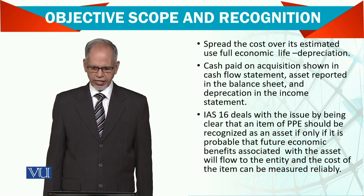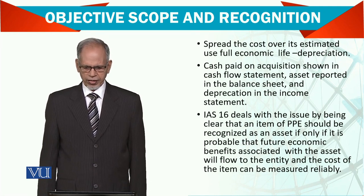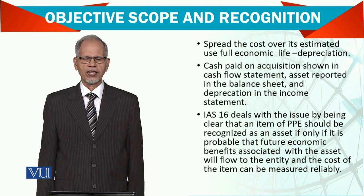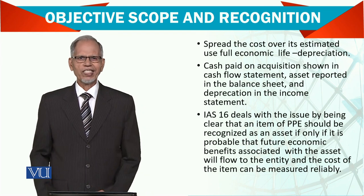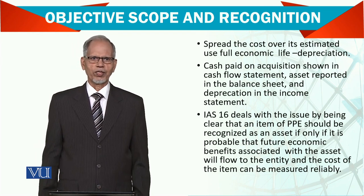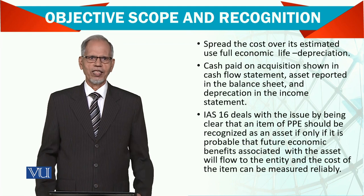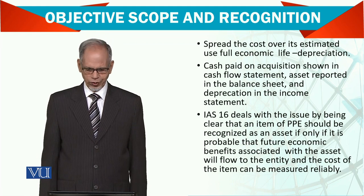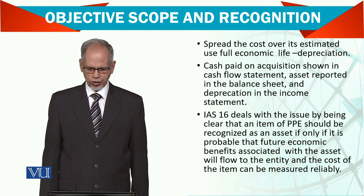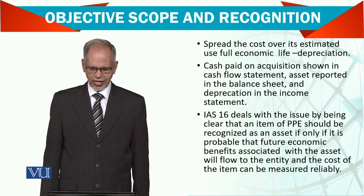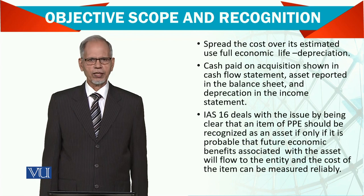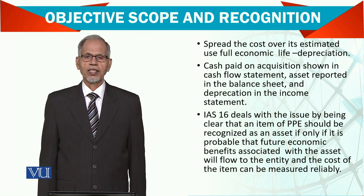Then we spread the cost over the asset's estimated useful life, which is depreciation. We are using these assets and continuously they are reducing in value, because if you use something there is obviously a reduction in its value. Cash paid on acquisition is shown in the cash flow statement, assets are reported in the balance sheet, and depreciation is reported in the income statement. This affects all three important financial statements.